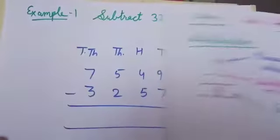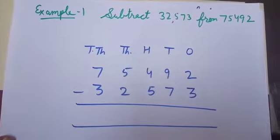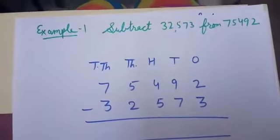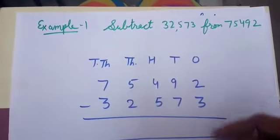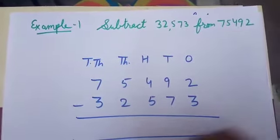Let us solve first example. Subtract 32,573 from 75,492. Let us start from the 1's place. 2 minus 3. But 2 is smaller than 3.